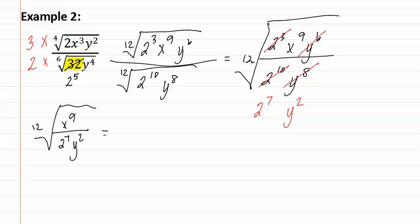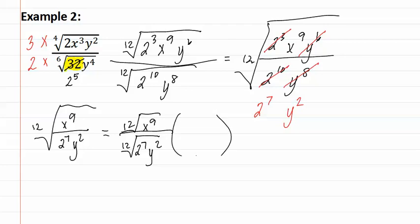We now need to split these apart so we can rationalize the denominator, which gives us the twelfth root of x to the ninth over the twelfth root of 2 to the seventh, y to the second. When we rationalize the denominator, we need to multiply the top and the bottom by the missing pieces. We will be multiplying by a twelfth root: we have seven 2's so we need an additional five, and we have two y's so we need an additional ten. We do this to the numerator as well.